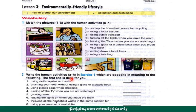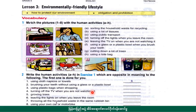Cutting down a lot of trees. Write the words in Activity 1 which are opposite in meaning to the following — the first one is done for you. Item 4: Using cloth napkins or towels. Item 5: Using a large tissue. Brushing your dish without using a glass or plastic bowl.